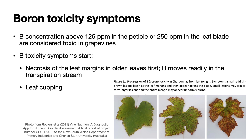Boron can also be toxic. Concentrations above 125 parts per million in the petiole or 250 parts per million in the leaf blade are considered toxic in grapevines. You can see the beginnings of boron toxicity symptoms here — first, you get some brown spots forming along the margin, which could also be a result of potassium deficiency. This is how boron toxicity shows up: it accumulates along the margins and then begins to spread throughout the leaf. It can also cause leaf cupping.